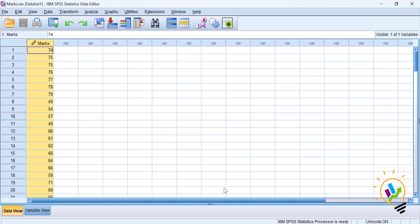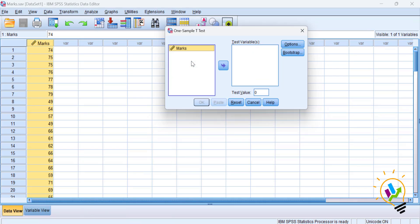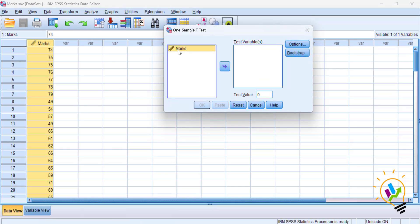Imagine the college has mean marks of 50. We want to see whether there is any significant difference between this group's mean marks to the college mean marks. So we will do a one-sample t-test. Let's do the analysis: Analyze, Compare Means, One-Sample T-Test. Take the marks as the test variable.